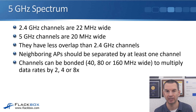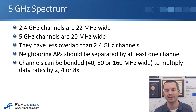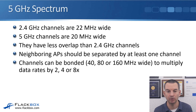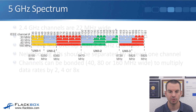Looking next at the 5 GHz spectrum. 2.4 GHz channels are 22 MHz wide, while 5 GHz channels are 20 MHz wide and have less overlap — so interference is less of a problem. Neighbouring APs should still be separated by at least one channel to reduce interference. With the 5 GHz spectrum, channels can be bonded: a single channel is 20 MHz, you can bond two together to make 40 MHz, four together for 80, and eight together for 160 MHz, multiplying data rates by two, four, or eight.